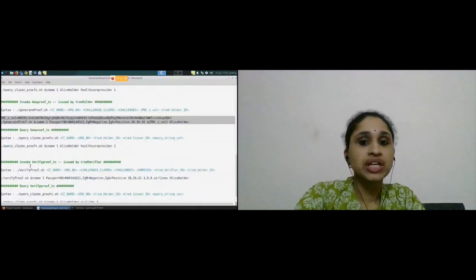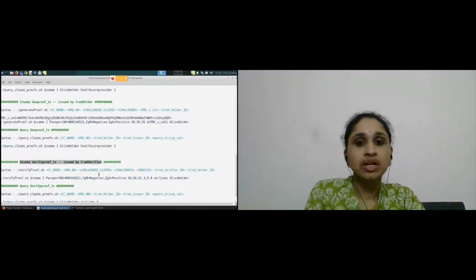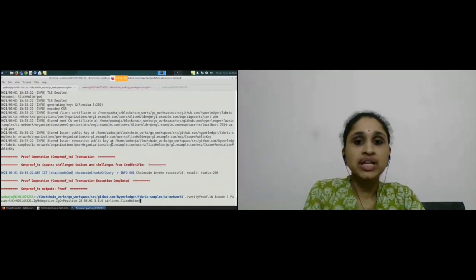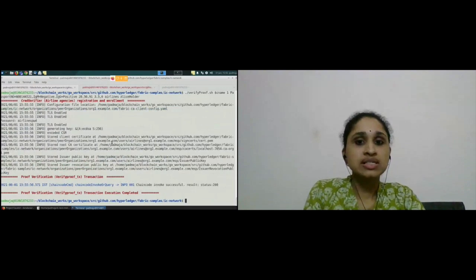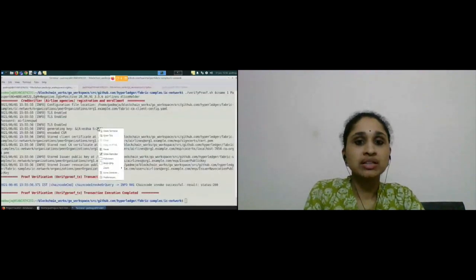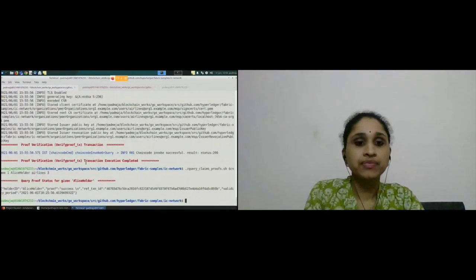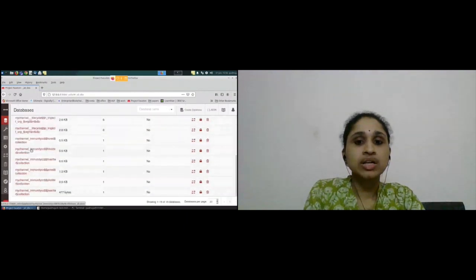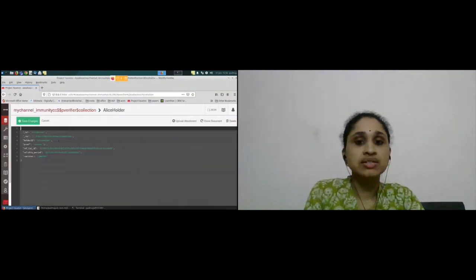Next we have the verify proof transaction. This transaction is issued by the verifier. This transaction takes proof and claims as input and verifies the authenticity. Once this transaction is successful, verification status is stored on the blockchain. Here we are querying the status. This status can be used for authenticating with the same verifier within a validity period. As you can see the state database, the verification success has been stored on blockchain.